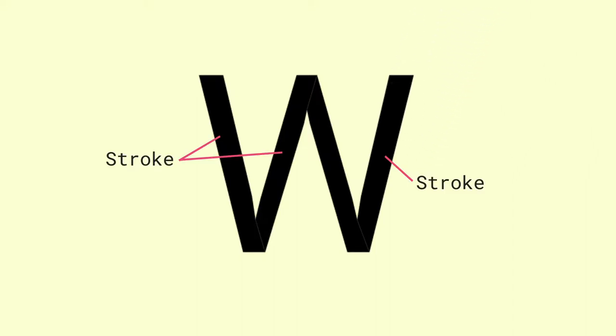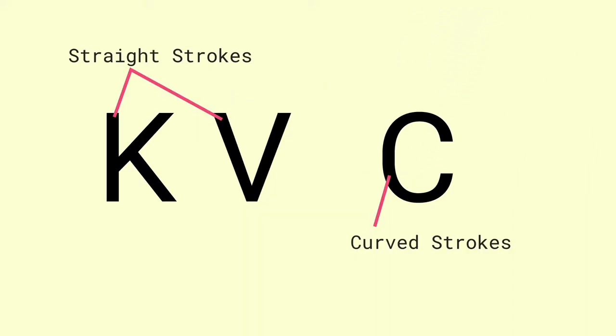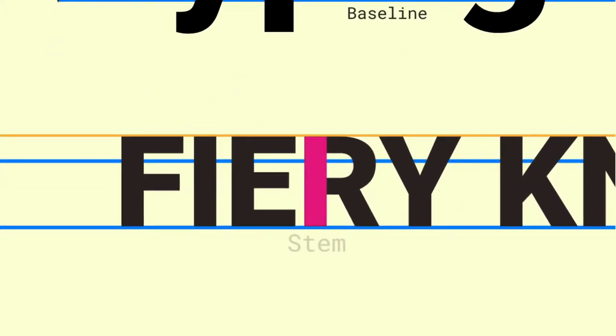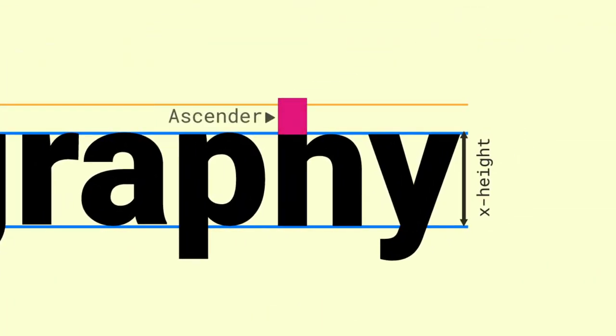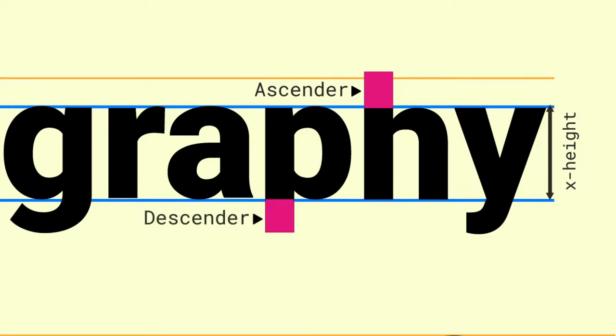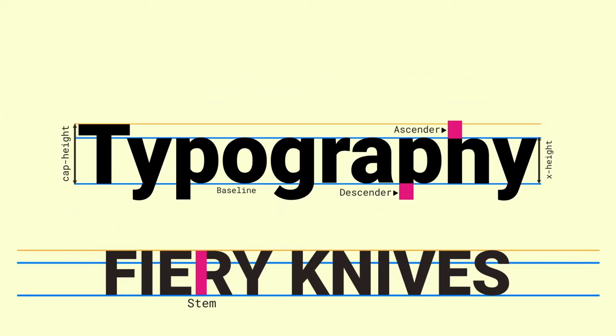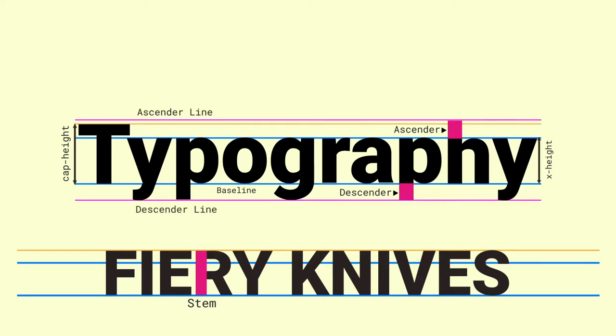Each letter is born when you wield a brush or a pen and make a few flicks. Each flick results in a stroke. Some strokes are straight and some are curled. A main vertical stroke is called a stem. A stroke that protrudes above the normal height of a lowercase font is called an ascender, and that which protrudes below the baseline in a lowercase letter is called a descender. Ascender lines and descender lines mark the boundaries up to which the ascenders and descenders can extend respectively.